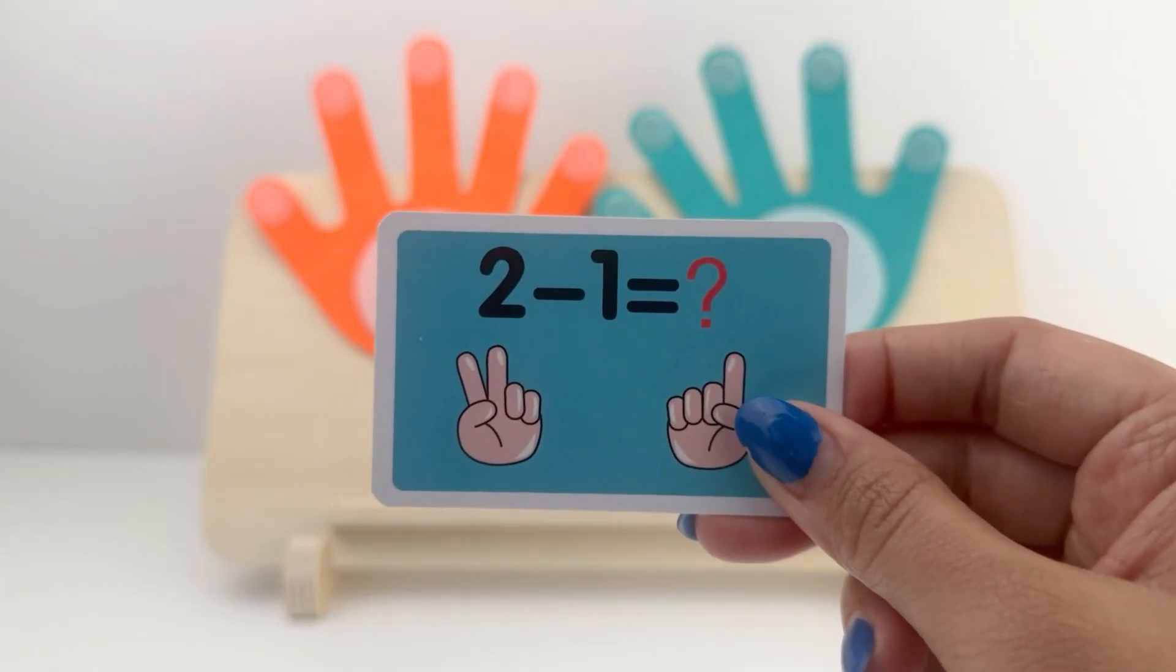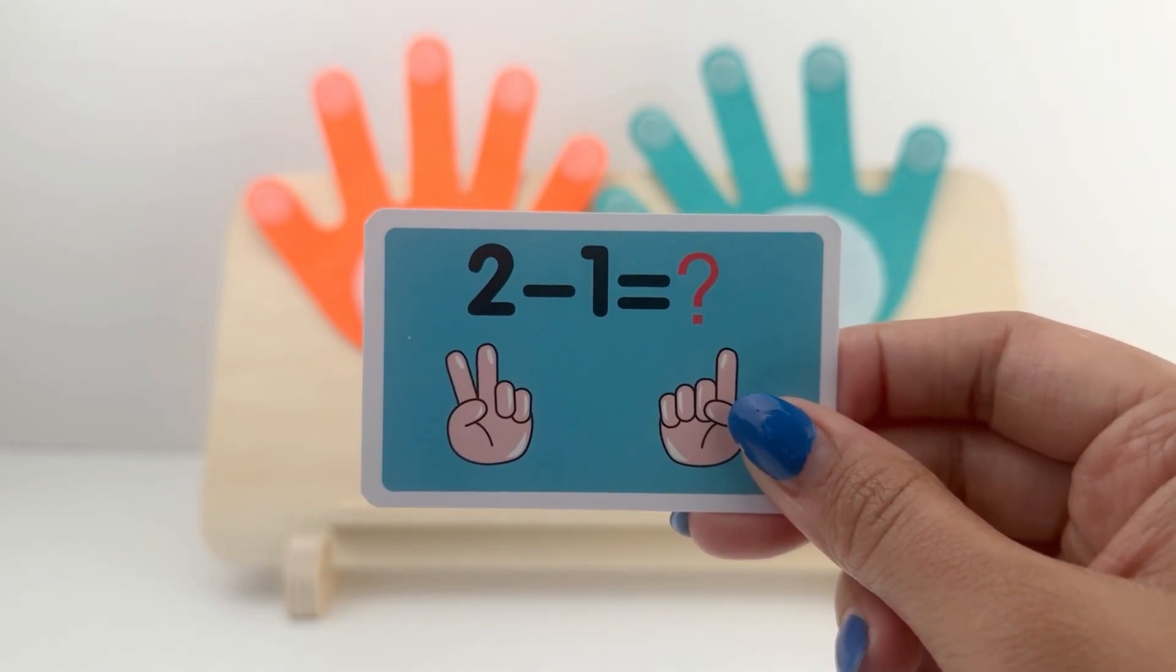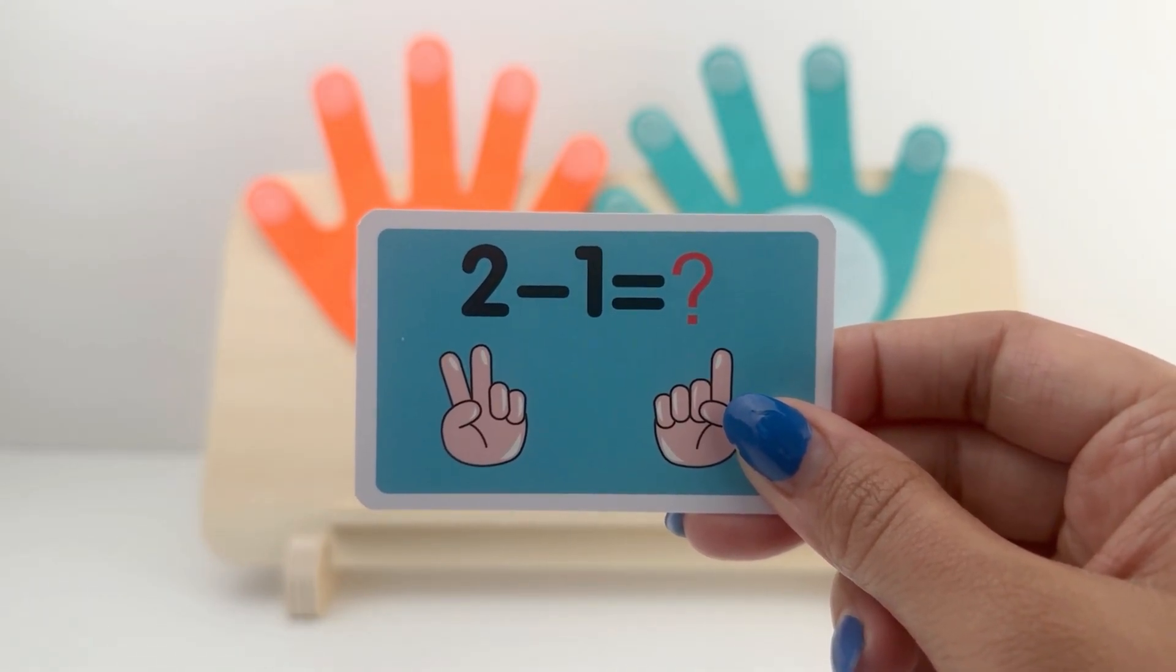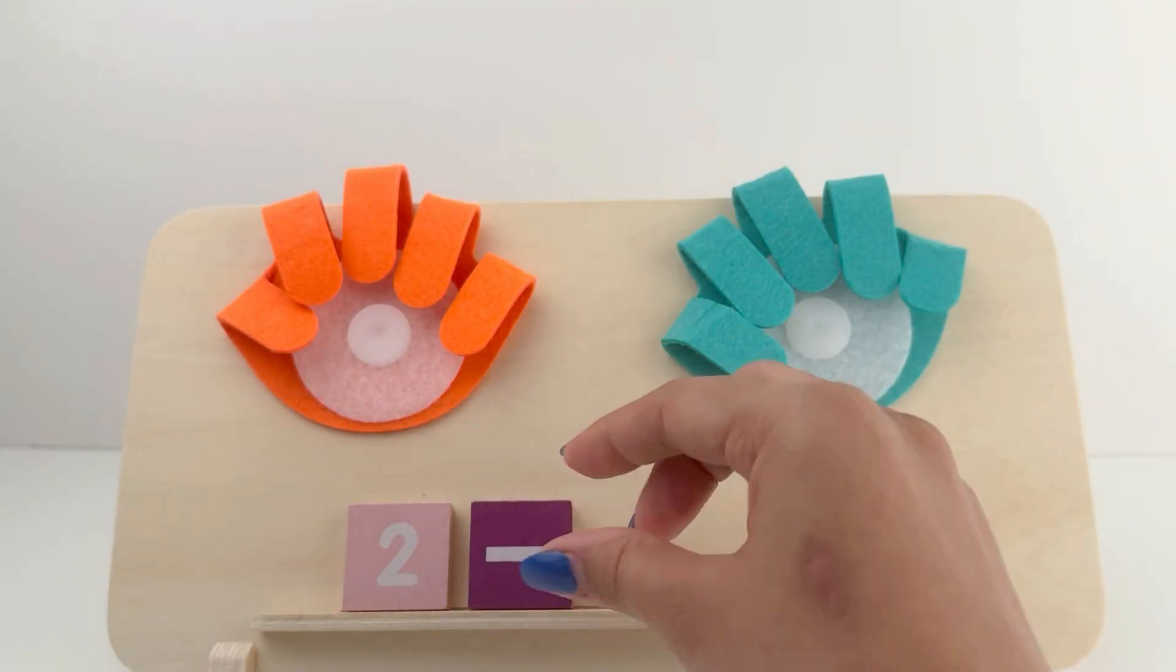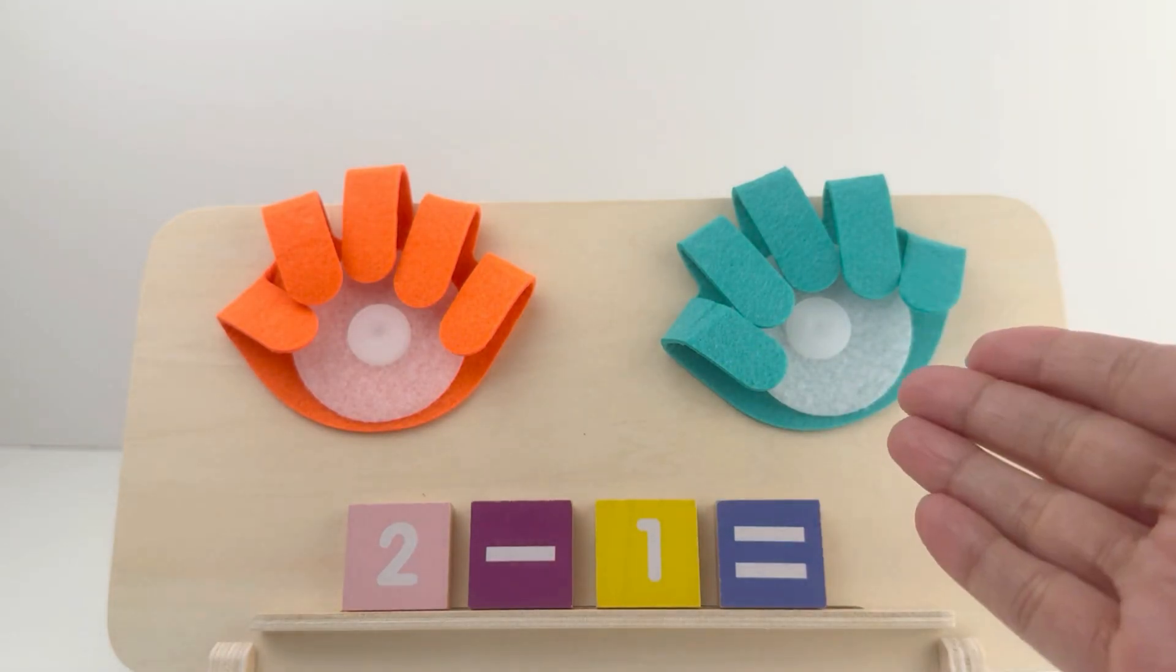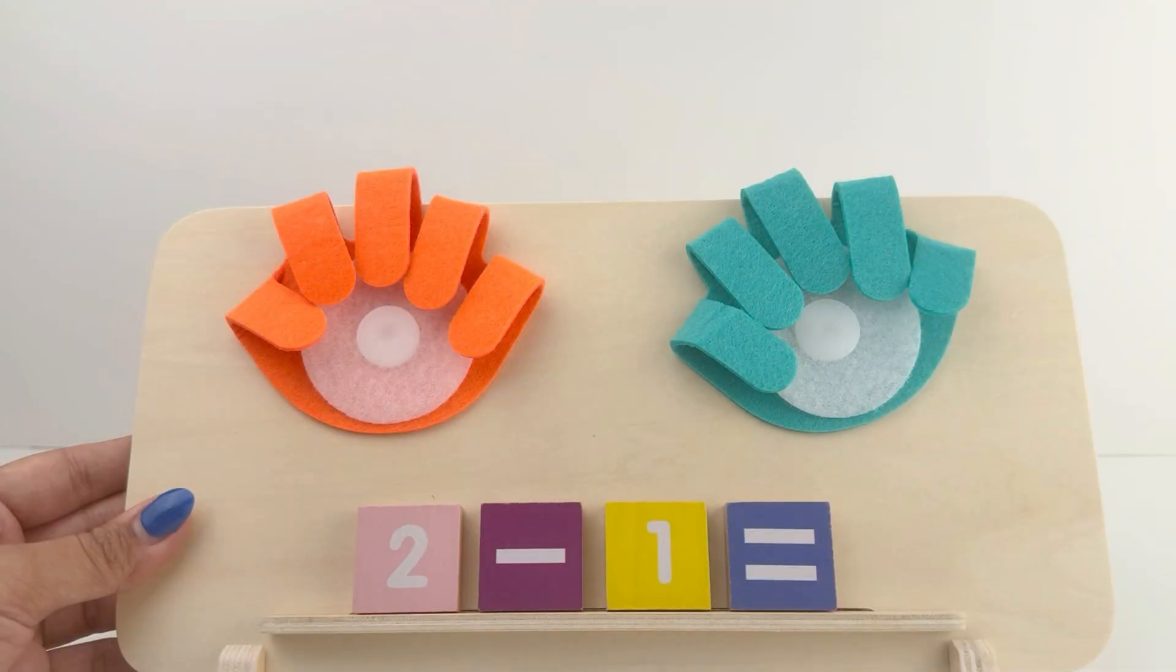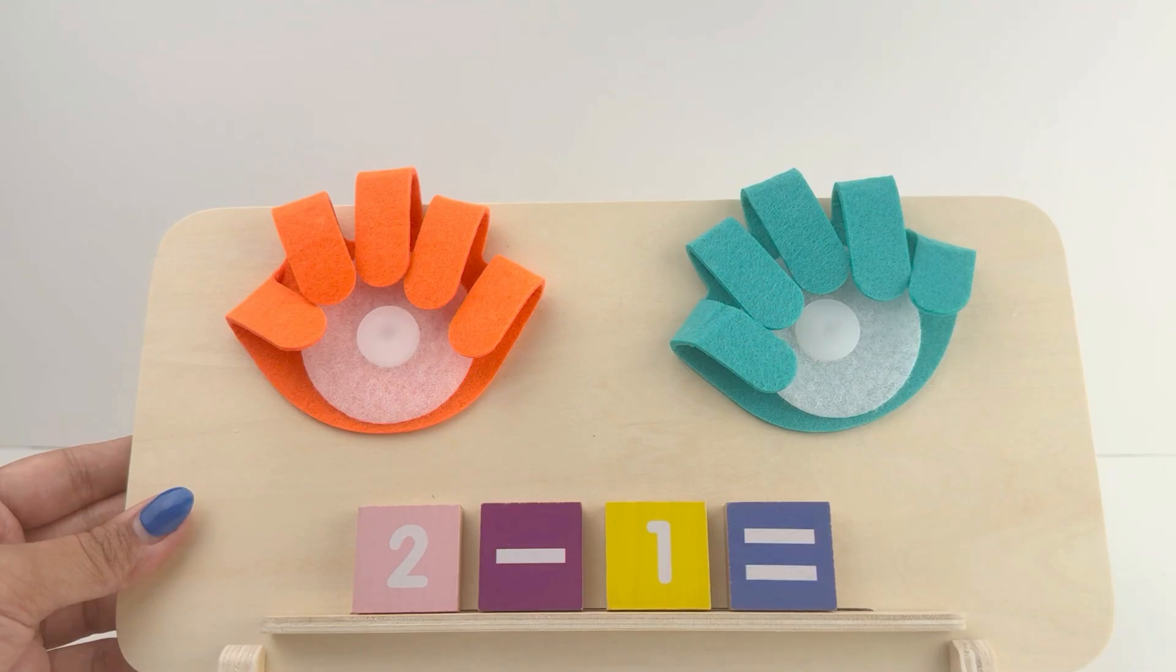Look at this card. It says 2 minus 1 equals. Let's find out together. Here it is on our board. 2 minus 1 equals. Let's use our toy hand to find out. Let's think it this way. I have 2 candies. Let's show 2 fingers on our orange hand.